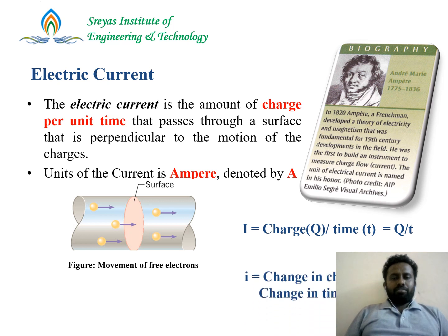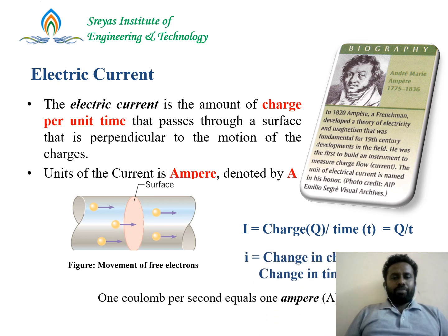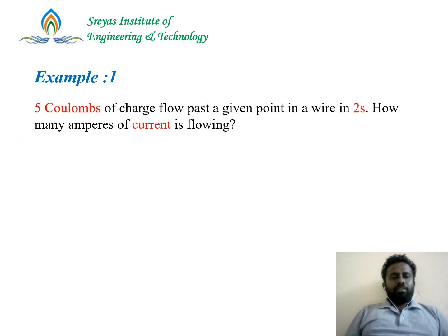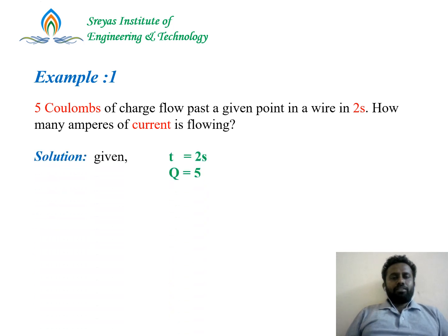The rate of flow of charge carriers; you can write it as dQ by dt. One coulomb per second equals one ampere. Let's take an example: 5 coulombs of charge flow past a given point in a wire in 2 seconds. How many amperes of current is flowing? Time is 2 seconds, charge is 5 coulombs, so current I = Q/T = 2.5 A.